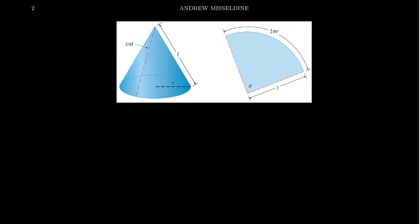If you're not sure about this, pause the video, get a piece of paper, cut out a sector of a circle with whatever angle and radius you want, then tape or glue the two radii together — you'll actually make a cone. So we get this sector of a circle, which is good news because we can calculate its area.